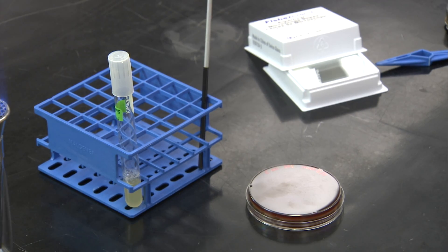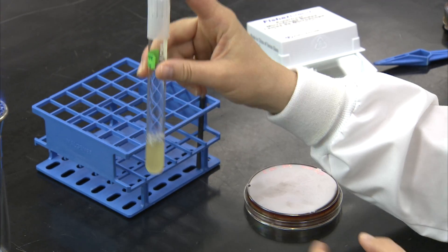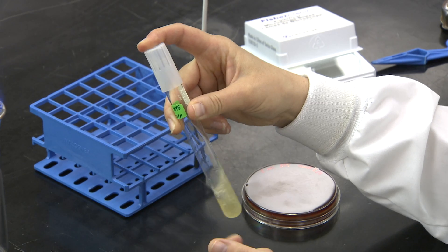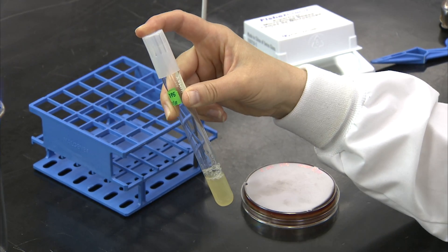To transfer bacteria from a liquid culture, you should first ensure the cells have not all settled to the bottom of the tube by gently flicking it with your finger.